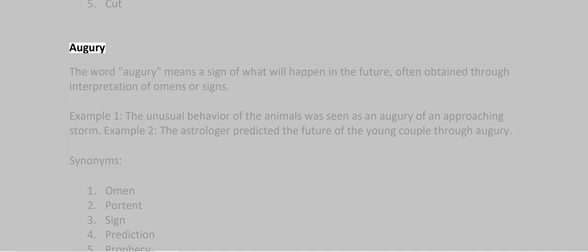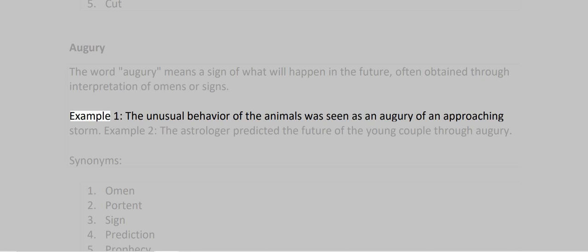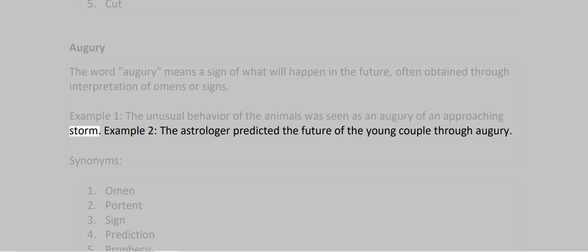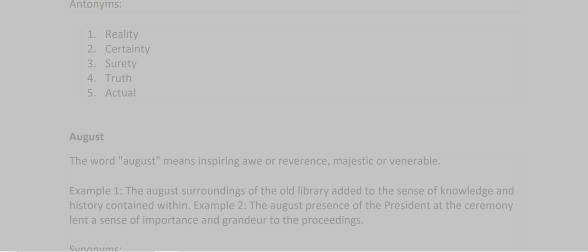Augury. The word augury means a sign of what will happen in the future, often obtained through interpretation of omens or signs. Example 1: The unusual behavior of the animals was seen as an augury of an approaching storm. Example 2: The astrologer predicted the future of the young couple through augury. Synonyms: 1. Omen 2. Portent 3. Sign 4. Prediction 5. Prophecy. Antonyms: 1. Reality 2. Certainty 3. Fact 4. Truth 5. Actuality.